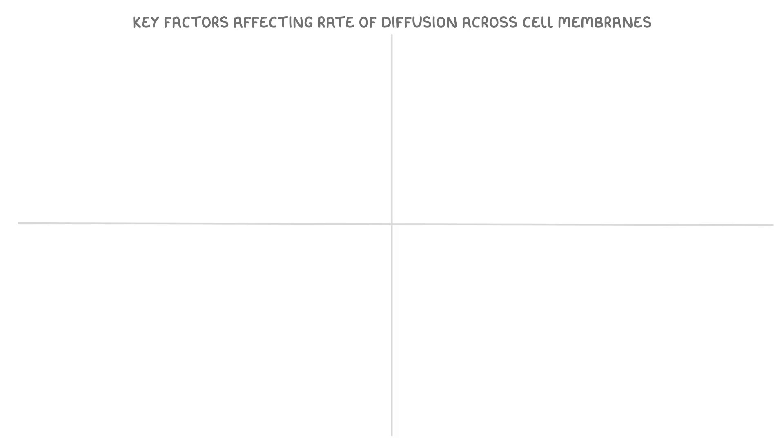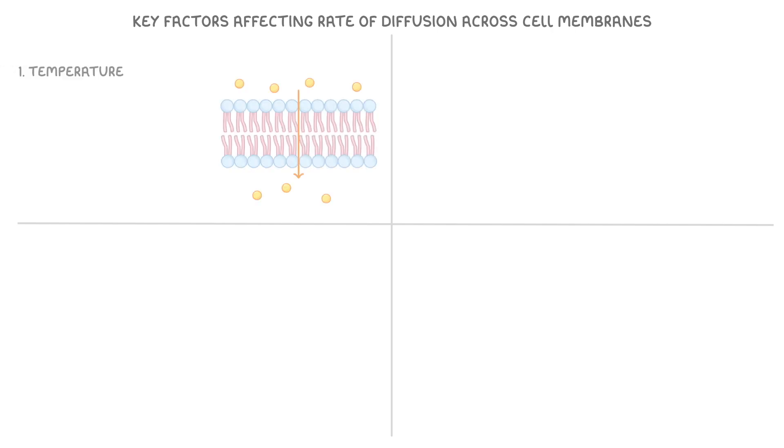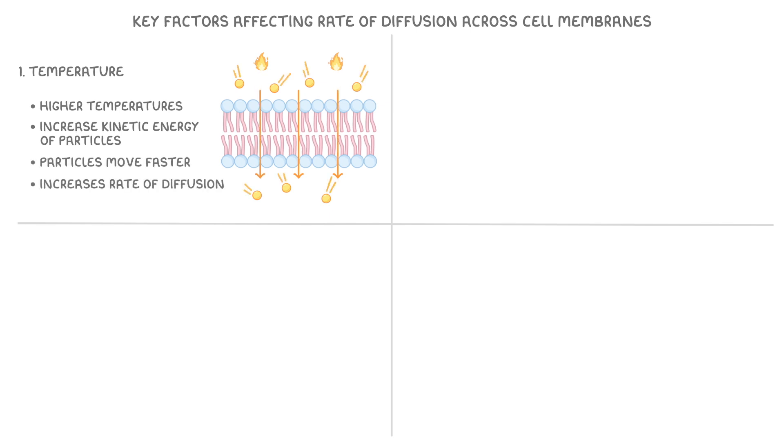Finally then, let's explore the key factors affecting the rate of diffusion across cell membranes. The first factor we need to consider is temperature, because higher temperatures increase the kinetic energy of particles, so these particles move faster, which then increases the rate of diffusion.